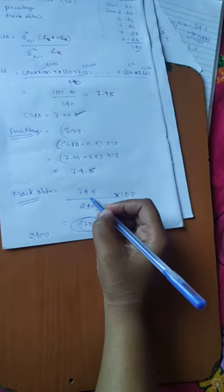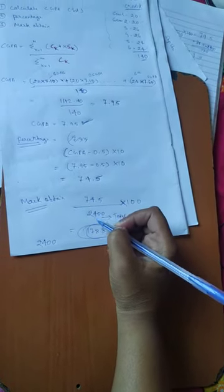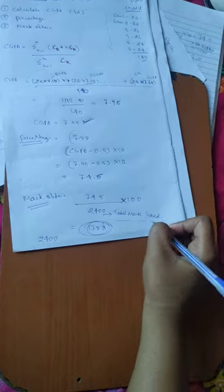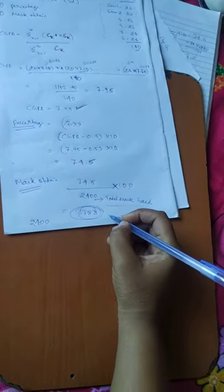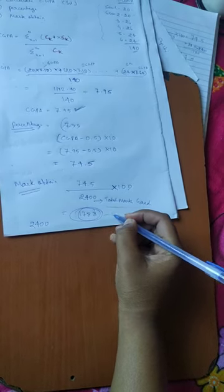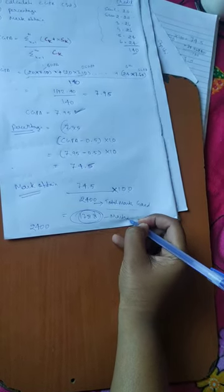Mark obtained is 74.5 by 2400. And the total marks is 100 for calculation. Overall, 1788 and the total marks obtained. Thank you.